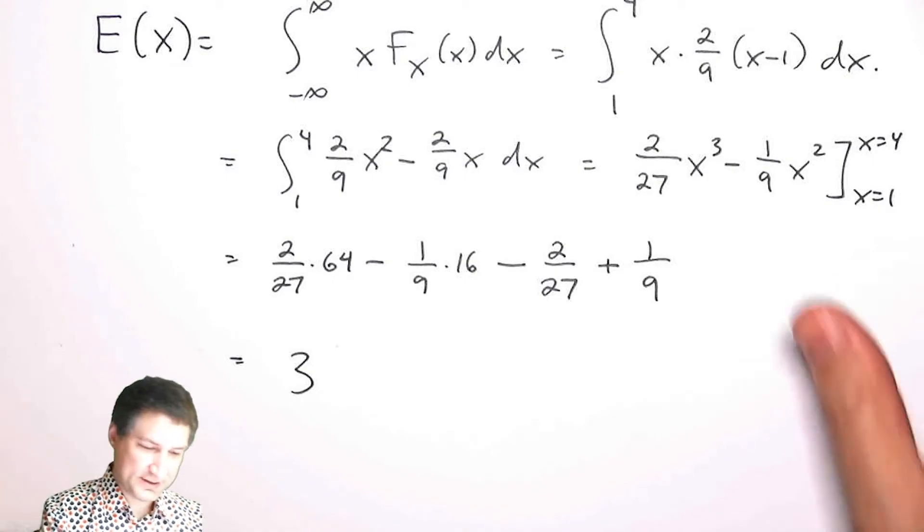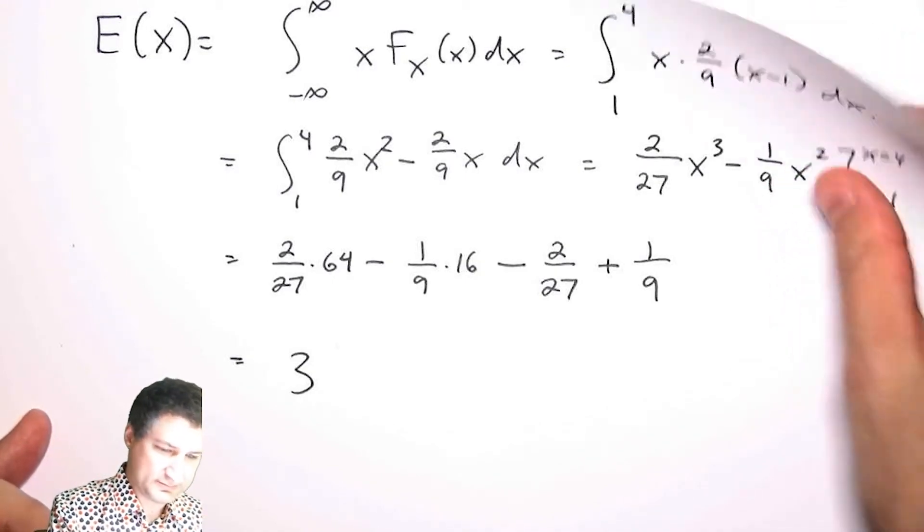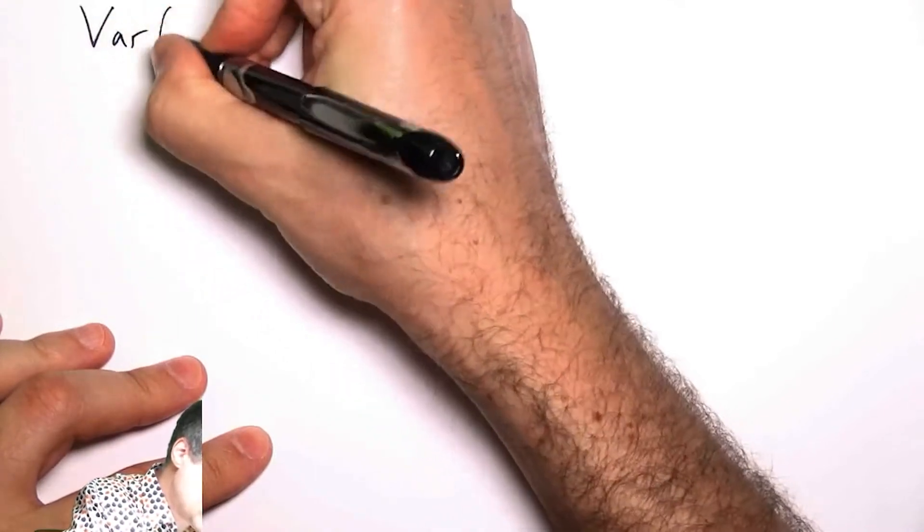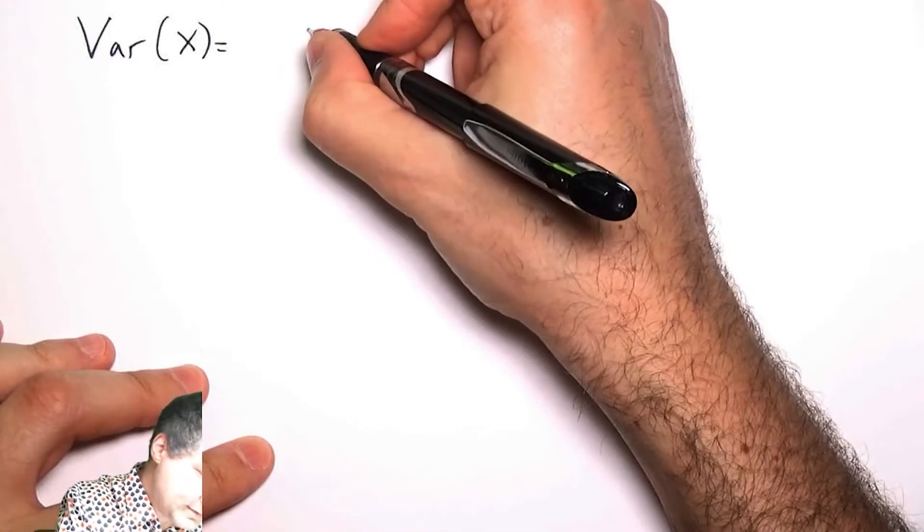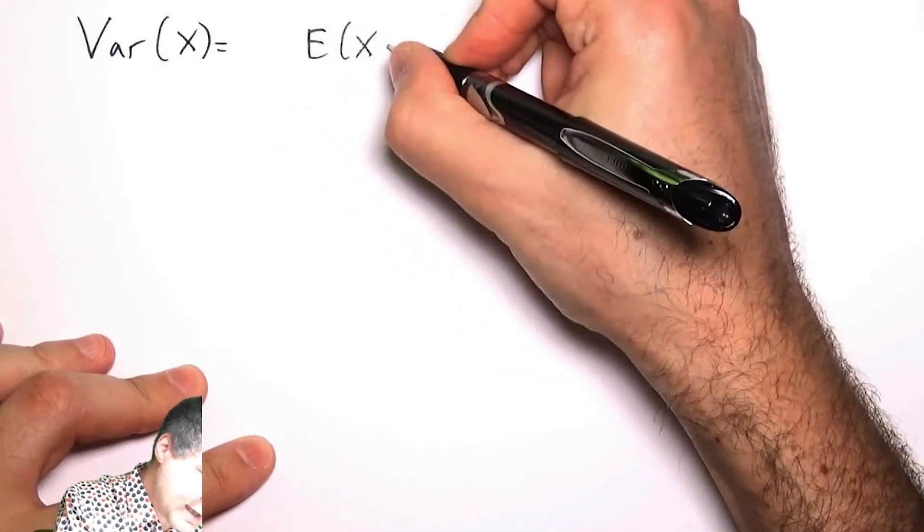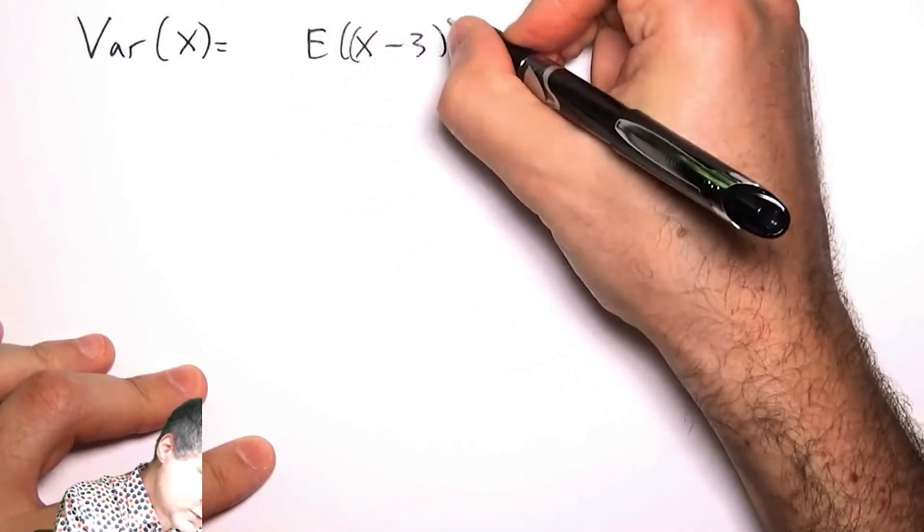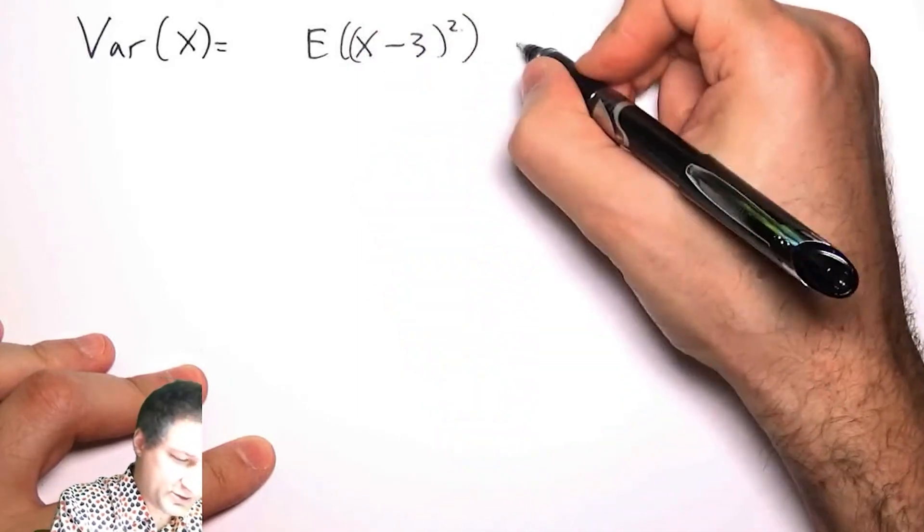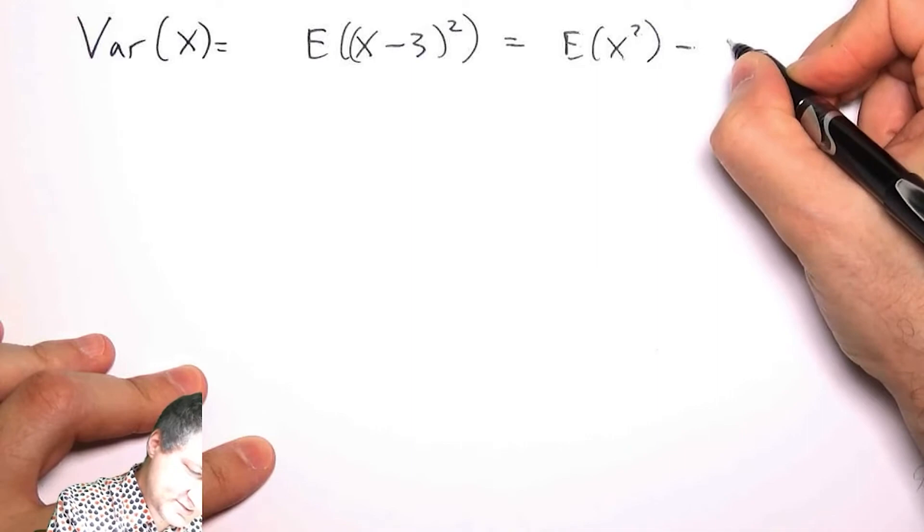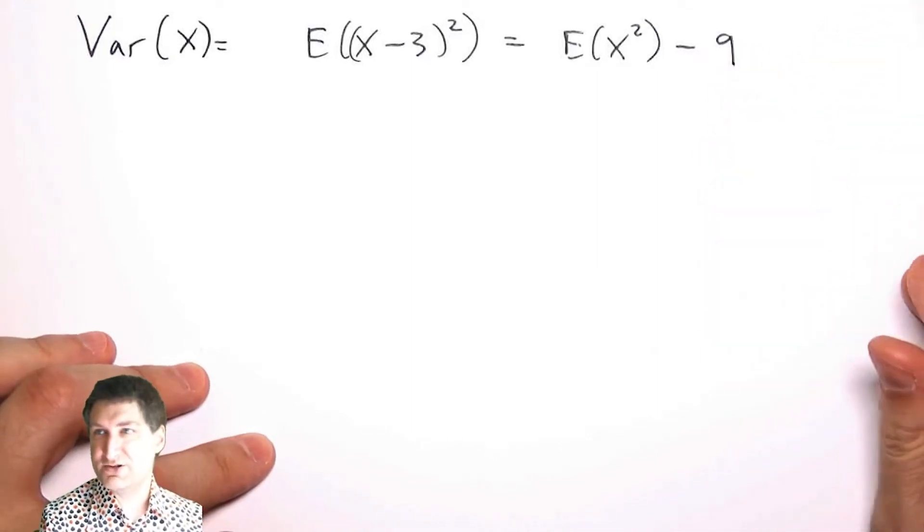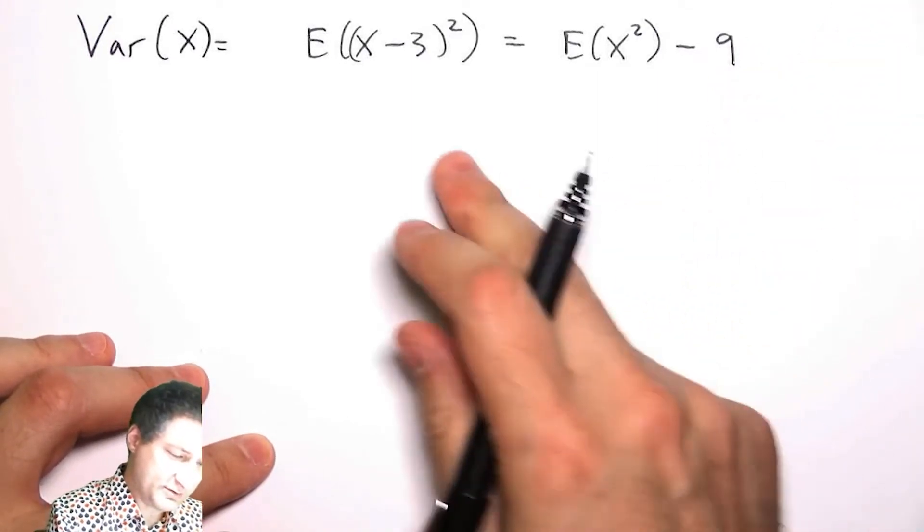The variance is going to be a little bit messier. Var(X)—well, there are two ways I can think about it: either E((X-3)²), that's the definition, or I could think about E(X²) - [E(X)]², which is 9. This is probably a little bit easier to do.